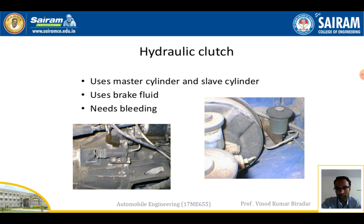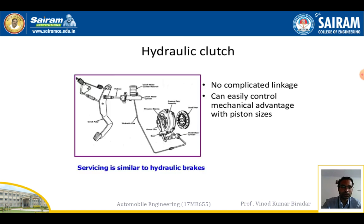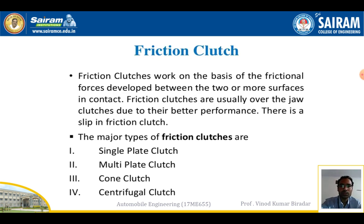Hydraulic clutch: here you can see the picture of a hydraulic clutch mounted on a bus. It uses a master cylinder and a slave cylinder, and also uses brake fluid and needs bleeding. There is no complicated linkage in the hydraulic clutch mechanism. You can easily control mechanical advantage with piston size. In this type we are using some fluid.